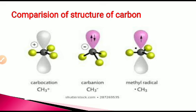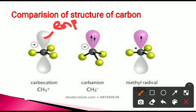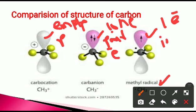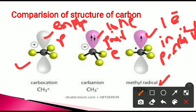Here is a comparison of carbon species. The carbocation contains an empty p orbital. The carbanion, where carbon has a negative charge, contains a lone pair of electrons. In the case of the methyl radical, which we will learn about next, it contains one unpaired electron in the p orbital. So: carbocation shows sp2 hybridization with an empty p orbital; carbanion shows sp3 hybridization with a lone pair in an orbital.